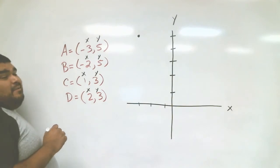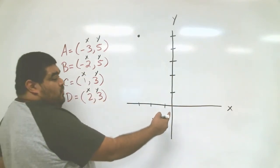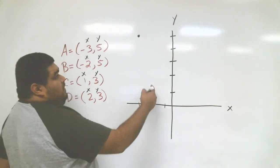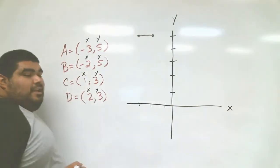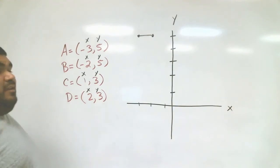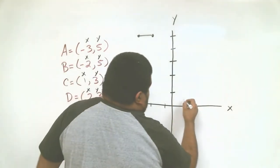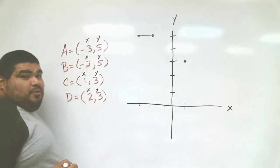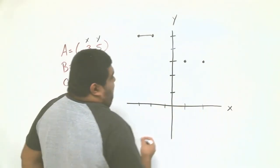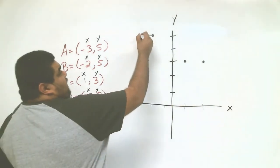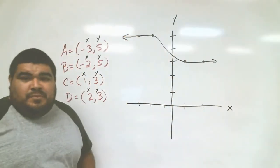Our second point is at negative 2 and 5 — so x is negative 2, then we go up to 5, that's point B. We connect point A to point B. Then point C is at 1 and 3 — we go to positive 1 on the x, then up 3, that's our third point. Our final point D is at 2 on the x and then 3 up. Now we connect all four points — A, B, C, and D — giving us our shape.